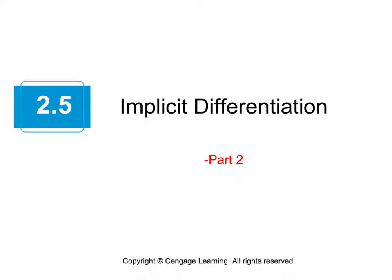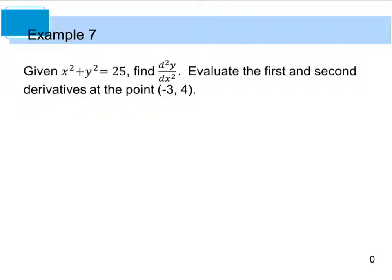Welcome back to the second part of section 2.5. Example 7 says that we're given the equation x squared plus y squared equals 25, and we have to find the second derivative. We're also going to evaluate both the first and second derivatives at the point negative 3, 4.